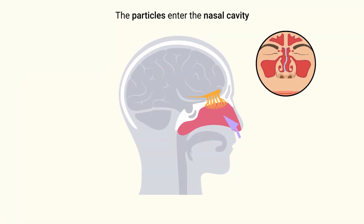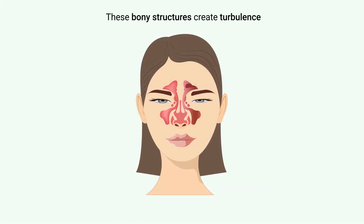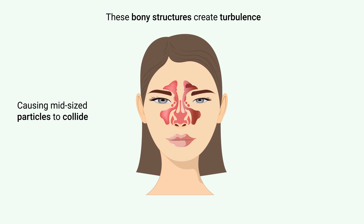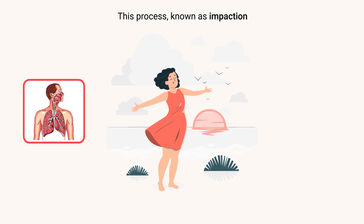Next, the particles enter the nasal cavity, where they encounter the nasal conchae, or turbinates. These bony structures create turbulence in the airflow, causing mid-sized particles to collide with the mucus-covered walls and get trapped. This process, known as impaction, ensures that many of these particles are removed before they can proceed further into the respiratory system.